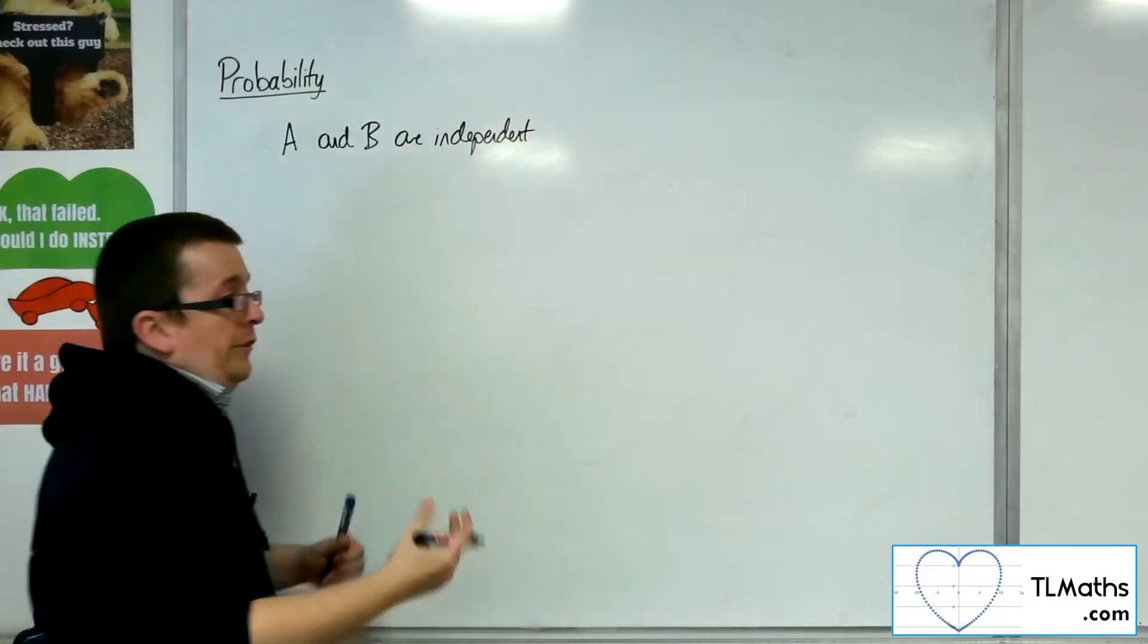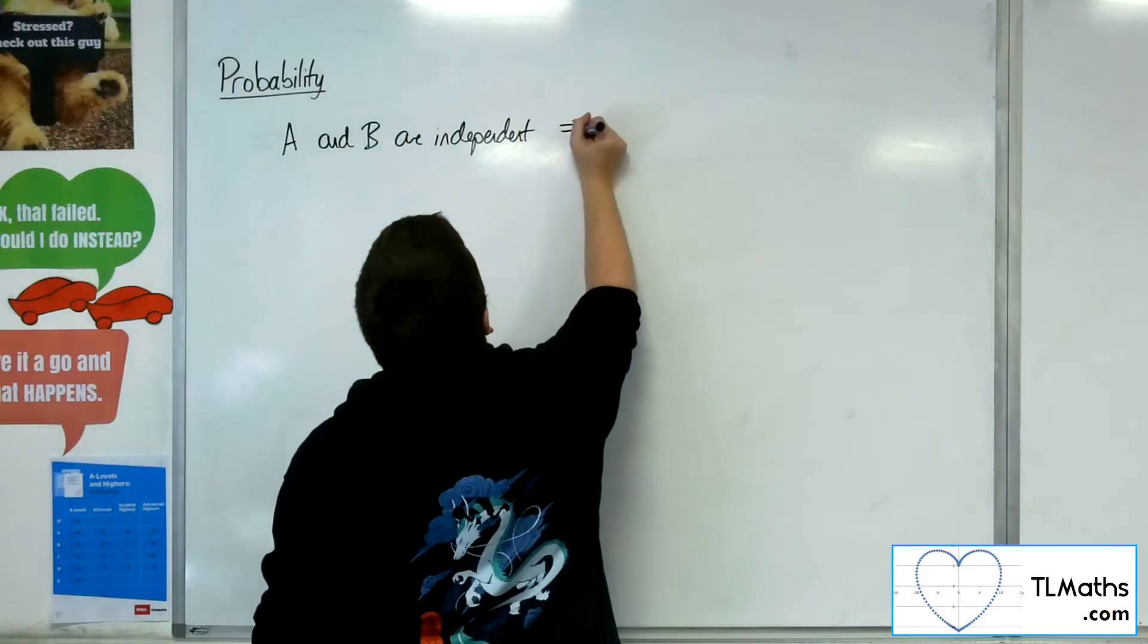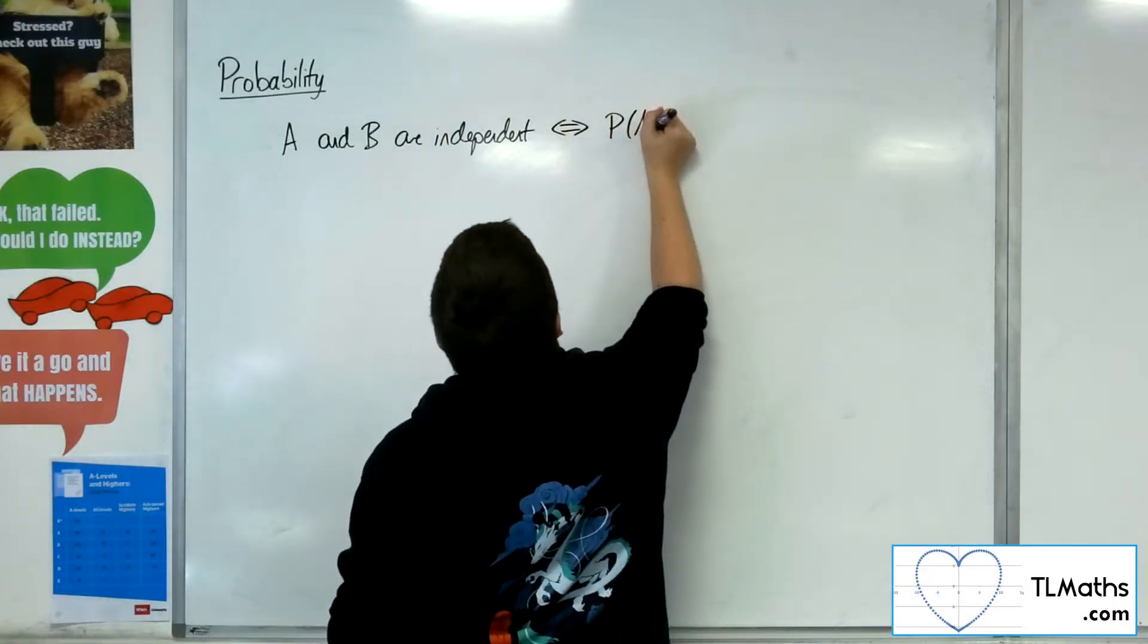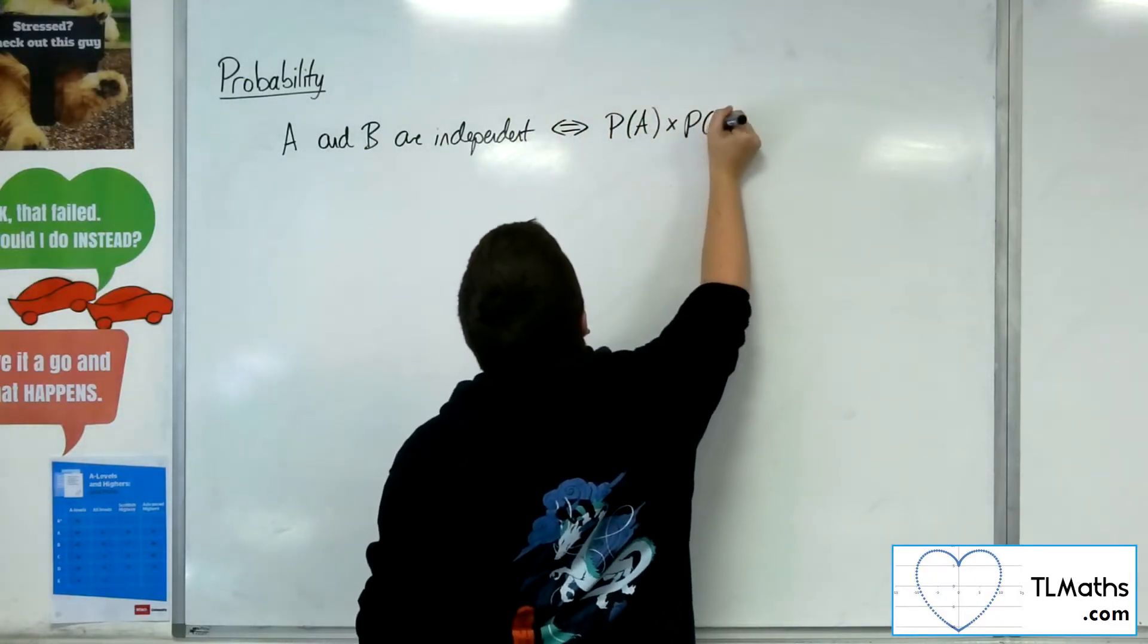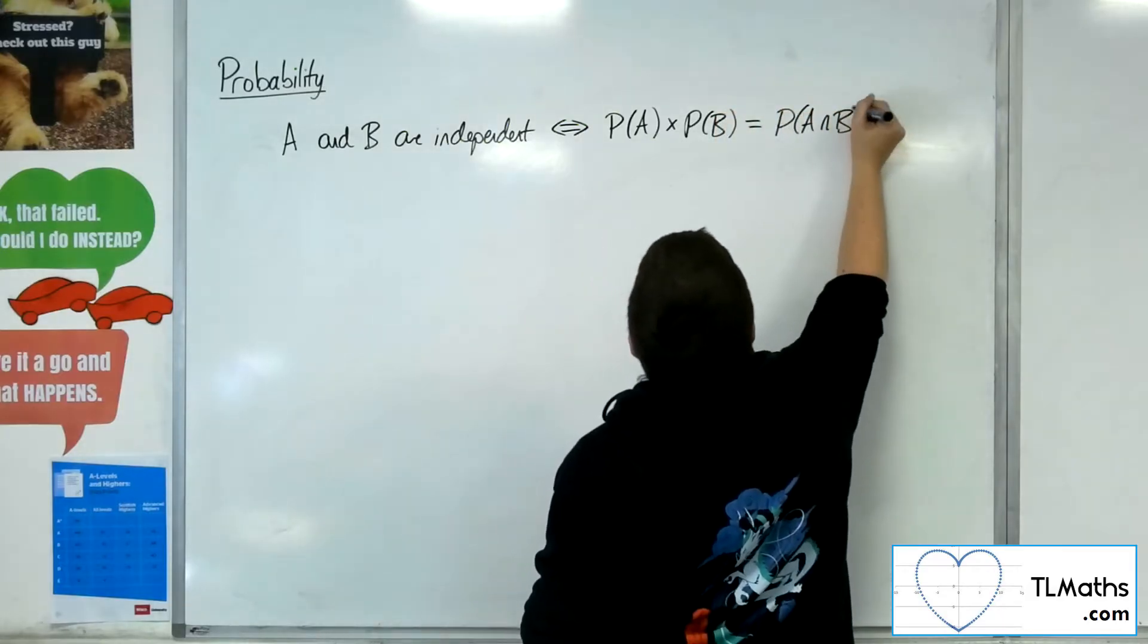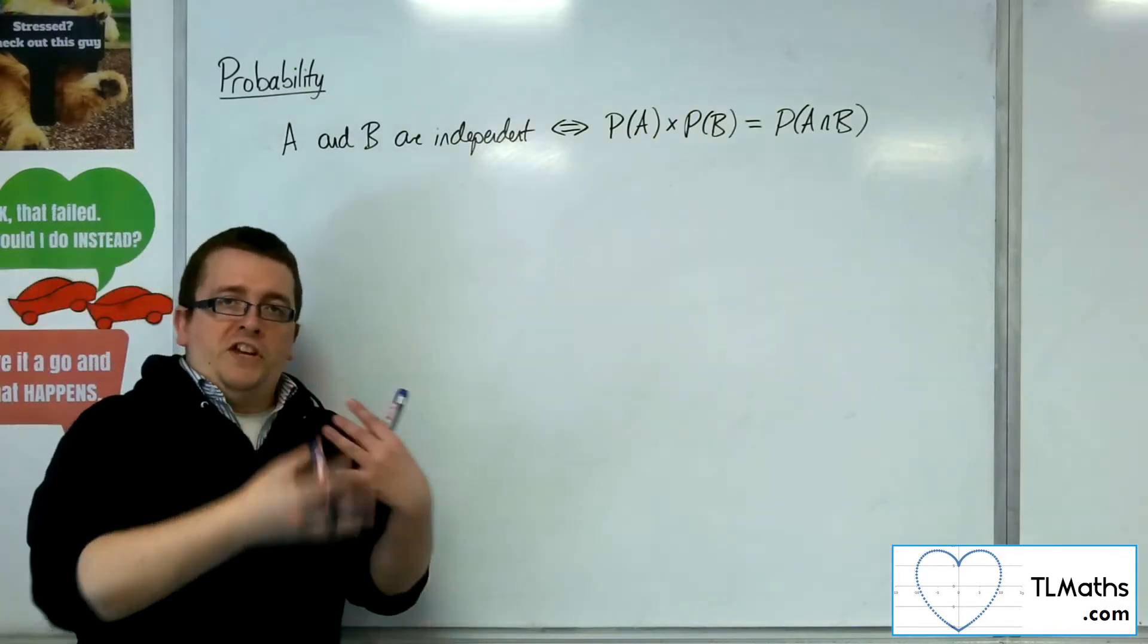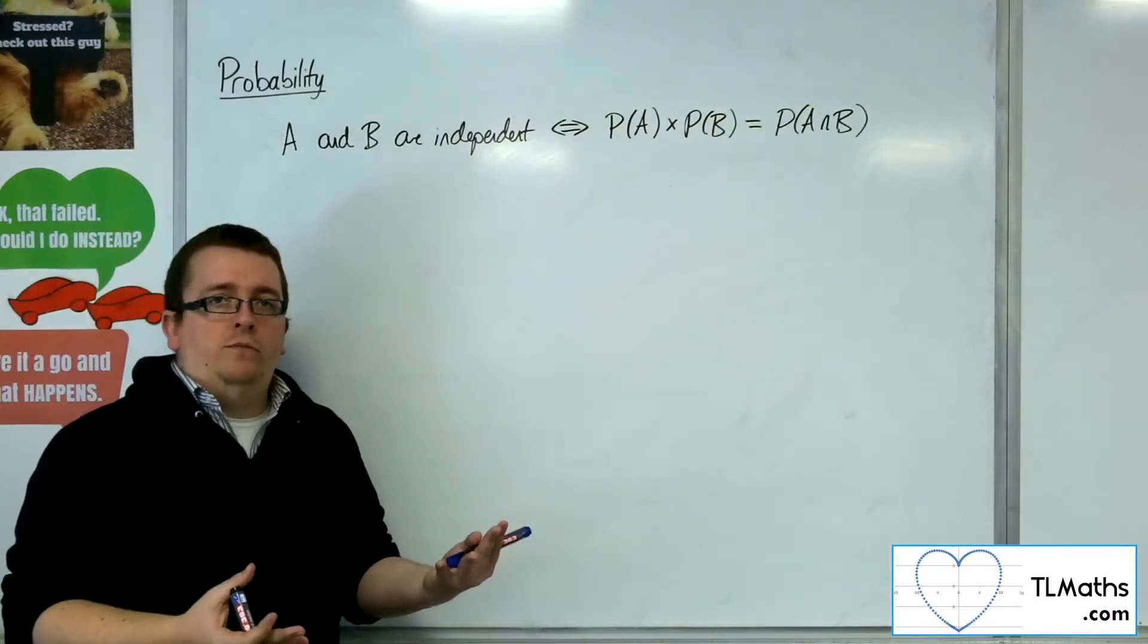So independent events, they won't affect one another. However, if and only if the probability of A times the probability of B is equal to the intersection of A and B. So that gave us a checking tool to determine whether two events were independent or not.